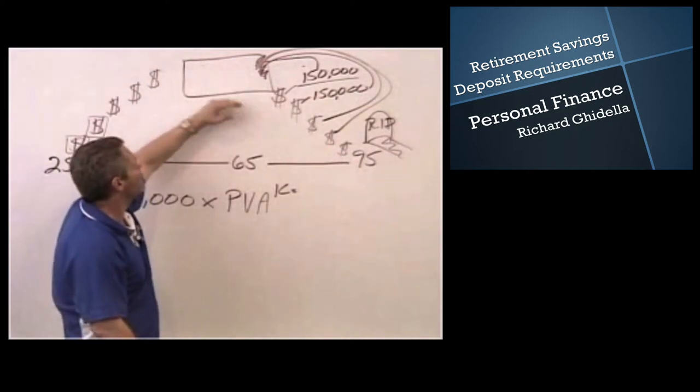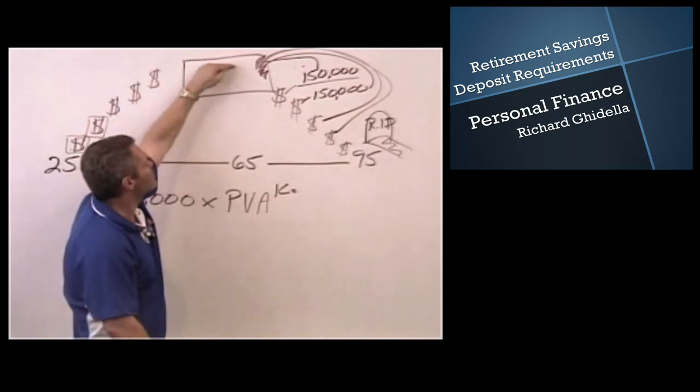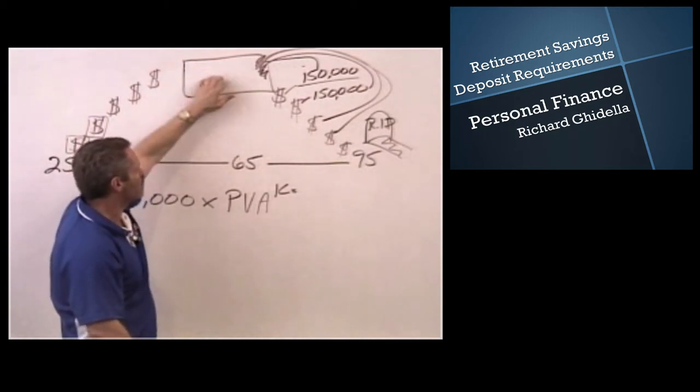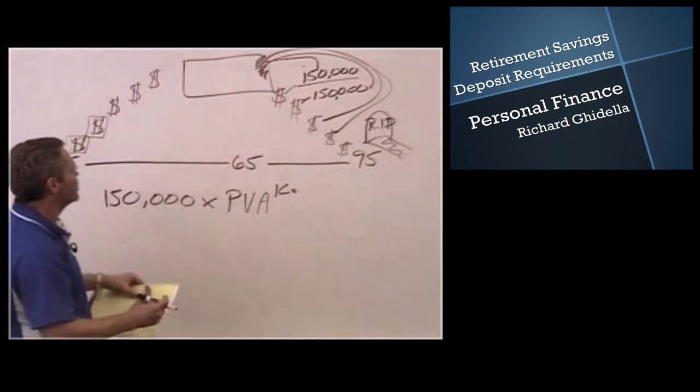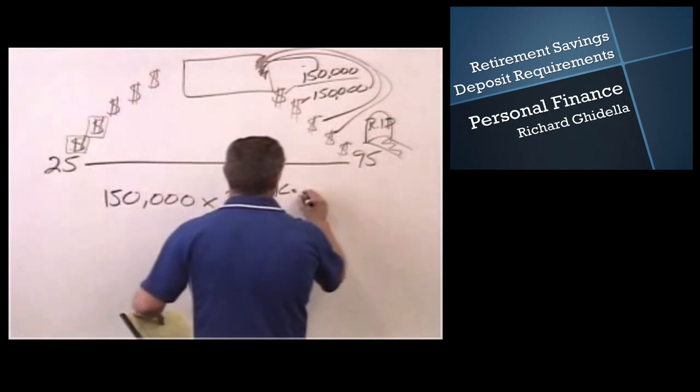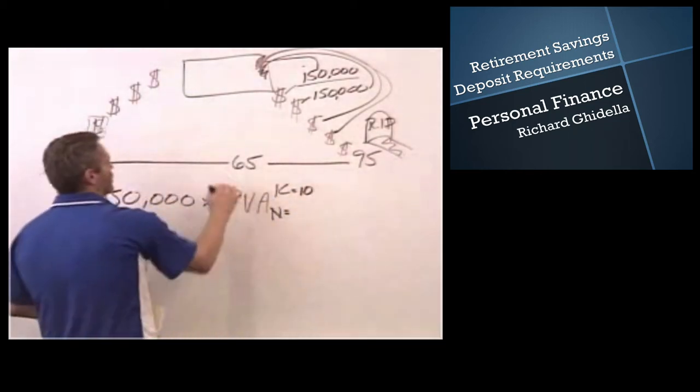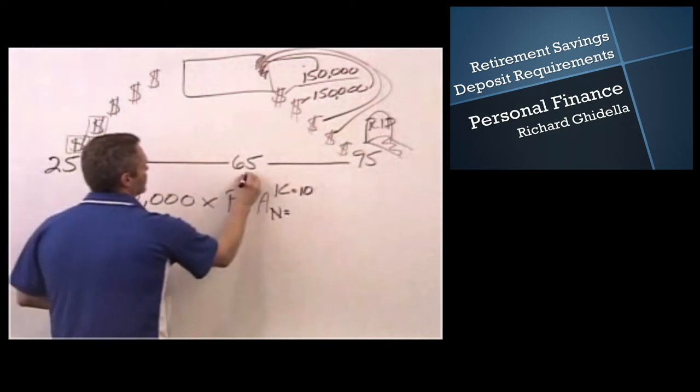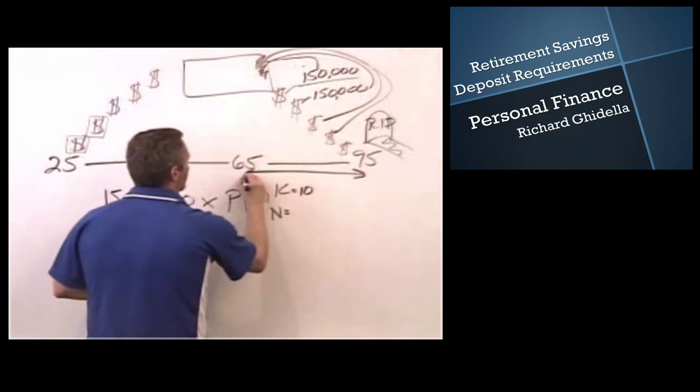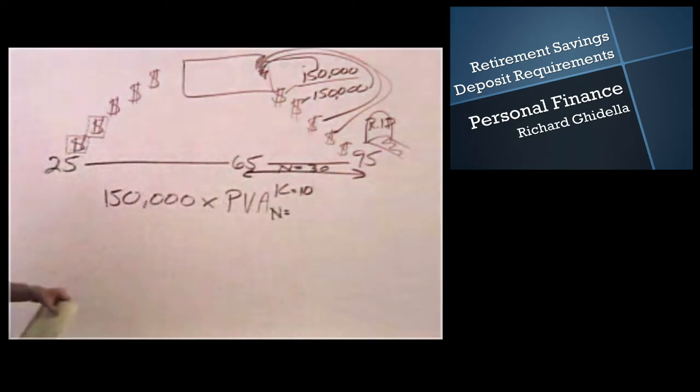If this fund is producing a very high rate of return and there's a lot of money being generated internally, then I don't have to have a big start number here. If this fund generates very little money internally, I have to start with a much bigger number. So as interest rates go down, this number is going to go up. And so we're going to solve it using three assumptions. K equals 10, N equals 30. 30 is how long we're going to be collecting this $150,000. 65 to 95 is 30 years.